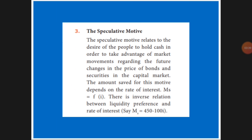Next is speculative motive. Speculative motive means people hold cash in order to take advantage of market movements. If the interest rate is more, they will not keep the money in their hand — they will keep it in the bank because more interest will come. If the interest rate is less, they will take the money and keep it with themselves. This depends upon the market situation.